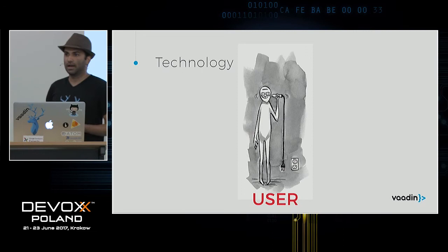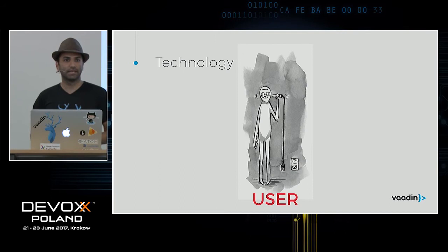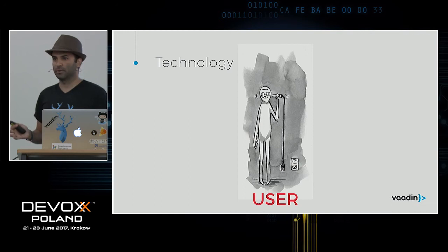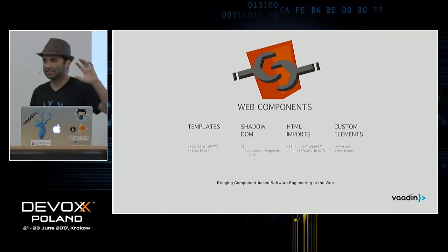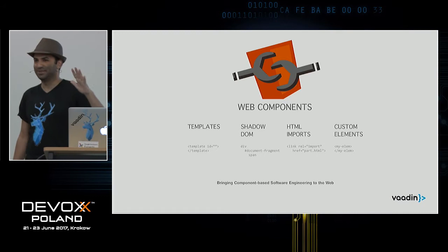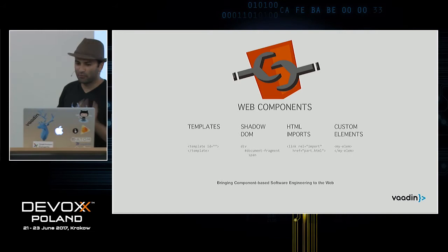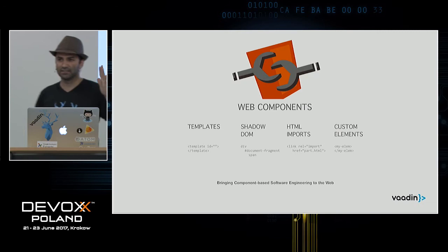I'm going to show you a demo on how to develop an offline-first application using Web Components, since I'm talking about the latest web standards. Web Components is a new standard — maybe a year ago it was a hype, but nowadays it's becoming a standard. It consists of four major topics: templates, Shadow DOM, HTML imports, and custom elements.